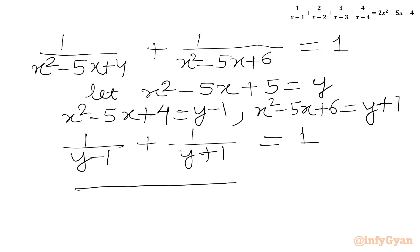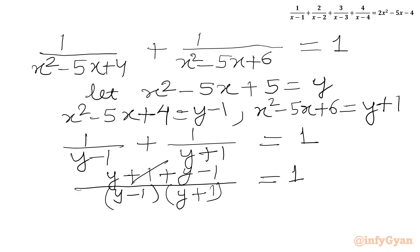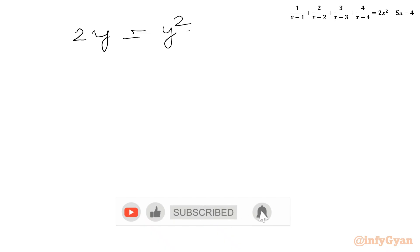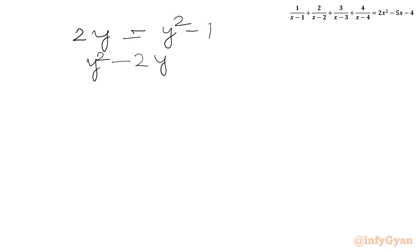So we write 1 over y minus 1 plus 1 over y plus 1 equal to 1. Taking LCM, the denominator is y minus 1 times y plus 1, and the numerator is y plus 1 plus y minus 1, giving 2y. Applying the difference of two squares identity we write 2y over y squared minus 1 equal to 1. Cross multiplying gives 2y equal to y squared minus 1, or y squared minus 2y equal to 1.